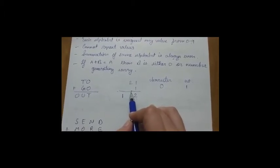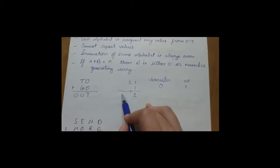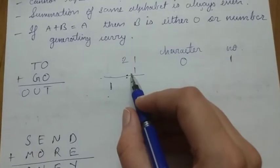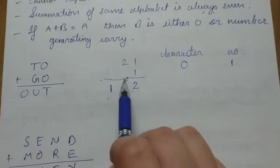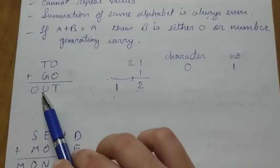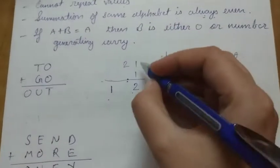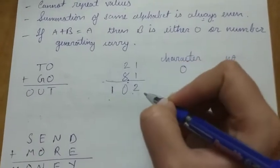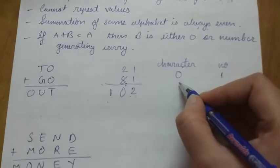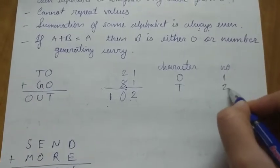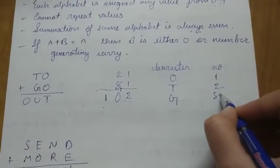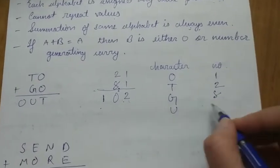If I assign G equals 8, then 8 plus 2 equals 10, and the value of U will be 0. No problem, it will work. So here we found a number corresponding to each character: T equals 2, G equals 8, and U equals 0.